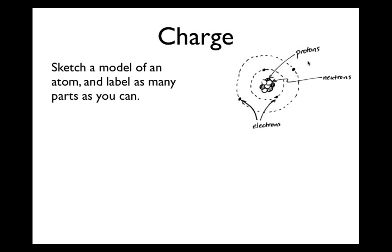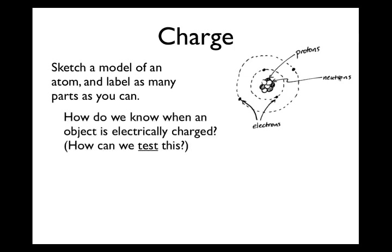You may have learned in your previous course that protons are considered to be electrically positive, electrons are considered to be electrically negative, and neutrons are considered to be electrically neutral. If you've not, I'm introducing that for the first time, but most of us have run into that in a previous science class somewhere along the road.